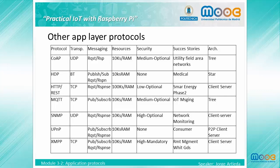The Simple Network Management Protocol (SNMP) is an internet standard protocol for collecting and organizing information about managed devices on IP networks and for modifying that information to change device behavior. Devices that typically support SNMP include routers, switches, servers, workstations, printers, modem racks, and more.